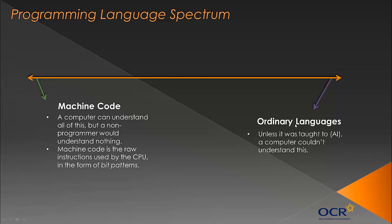At the other end of the spectrum we have ordinary or natural languages such as English and German. Unless a computer was specifically taught — as in artificial intelligence, which is still relatively basic — a computer can't understand ordinary languages, because in our brains words are represented by images. For example, someone born deaf will think of words as images rather than sounds. So only humans with our complex brains can understand ordinary languages at this moment.